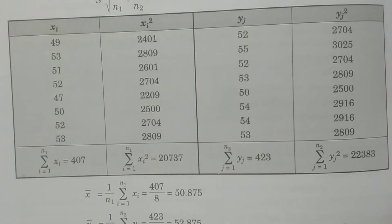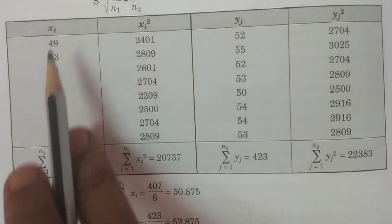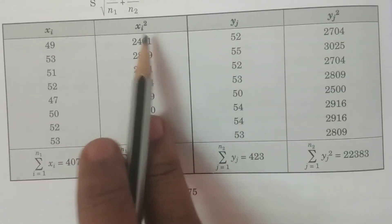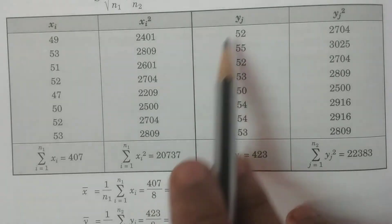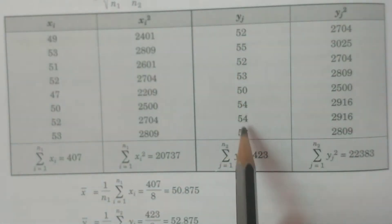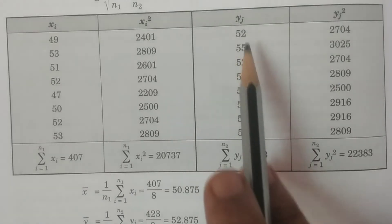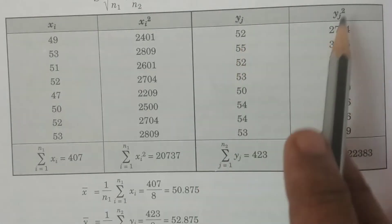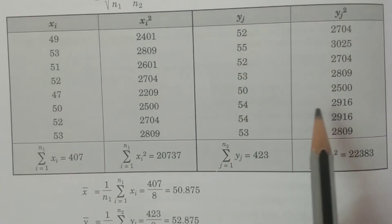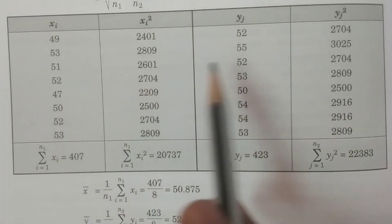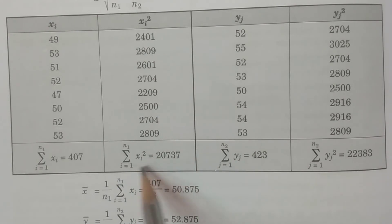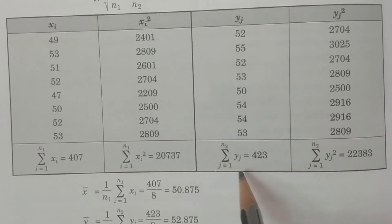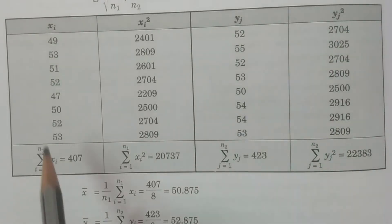We calculate sample means, sample variances, and sample standard deviations. Set up columns for xi and xi², and yj and yj². For xi, square the values: 49², 53², etc. Similarly for yj values from sample B: 52², 55², etc. Then compute the totals: Σxi, Σxi², Σyj, and Σyj².